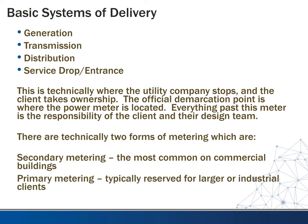The other form is primary metering, which is typically reserved for large or industrial clients. In this case, we do the metering on the primary side of the utility transformer. That being the case, the client will likely be responsible for that transformer — they'll need to purchase it, and they'll be responsible for it if it breaks down.